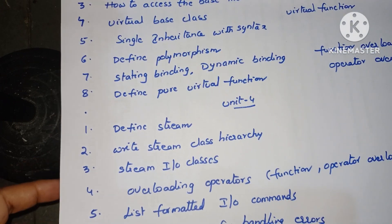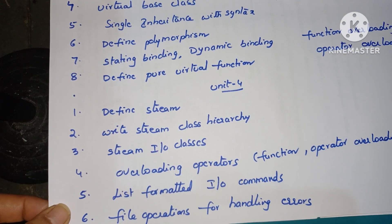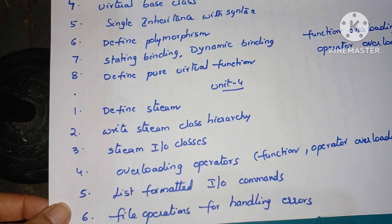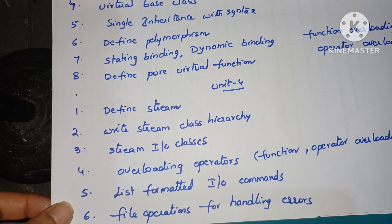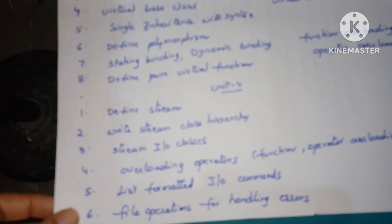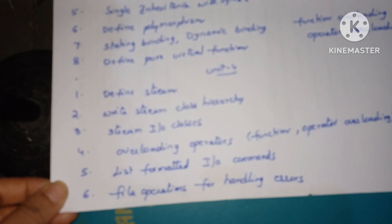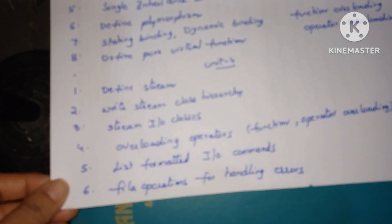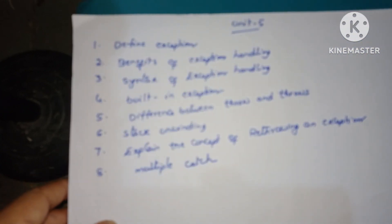The Unit 4 questions are: define stream. What is stream? Write stream class hierarchy and stream IO classes. Overloading operators — function overloading and operator overloading. List formatted IO commands and explain about file operations for handling errors. These are the important questions in Unit 4.